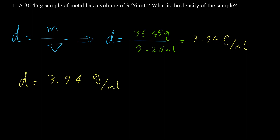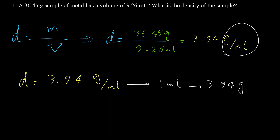This means one milliliter of this object has 3.94 grams. Grams per milliliter is the most common unit for density, but there is another unit: kilograms per cubic meter.